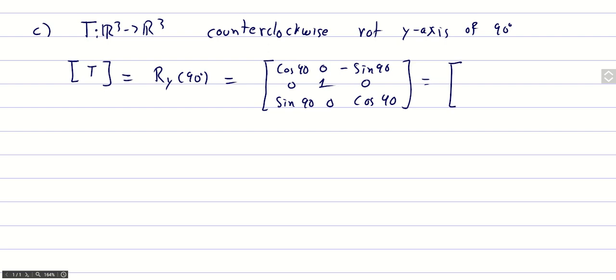we obtain the matrix 0, 0, minus 1, 0, 1, 0, 1, 0, 0, which is the representation of this linear transformation.